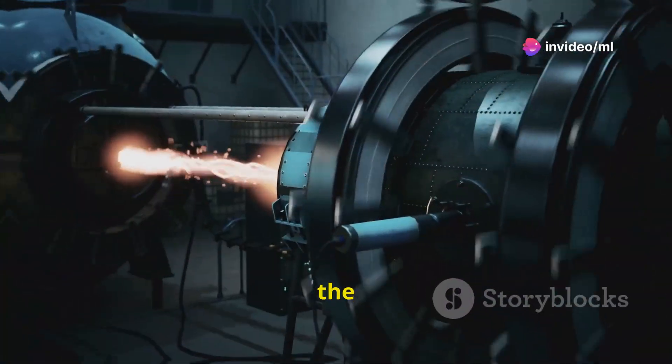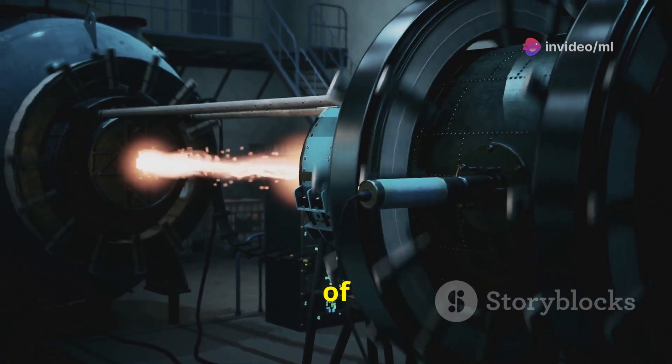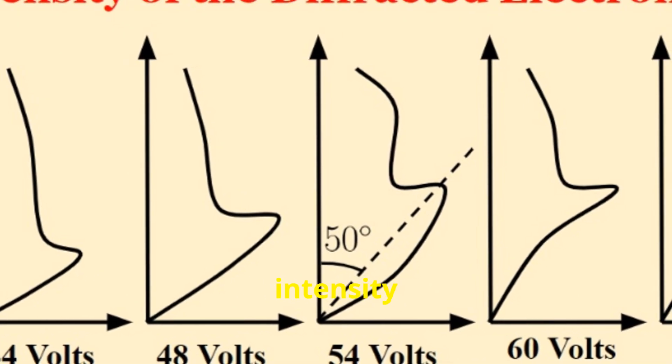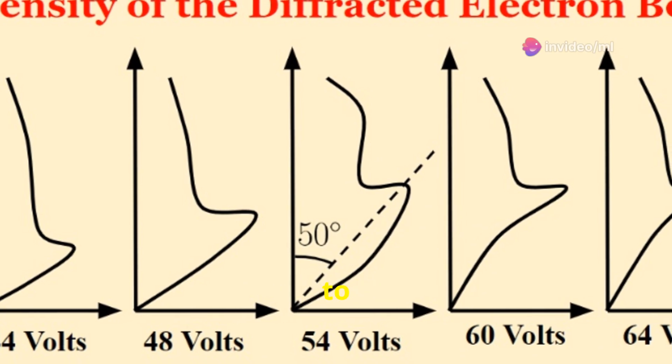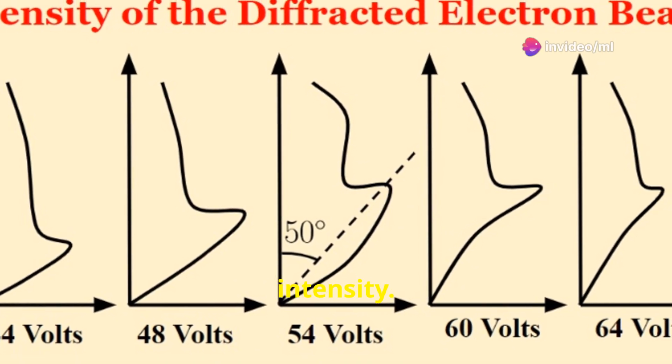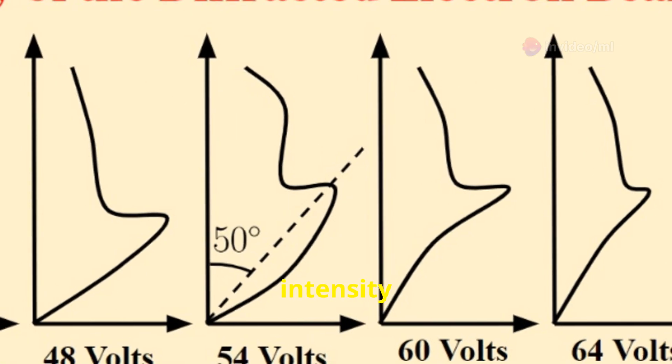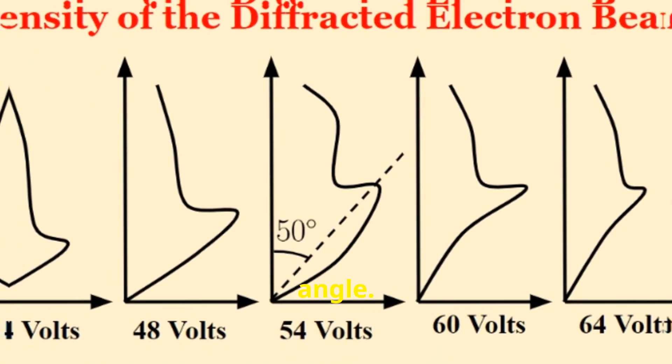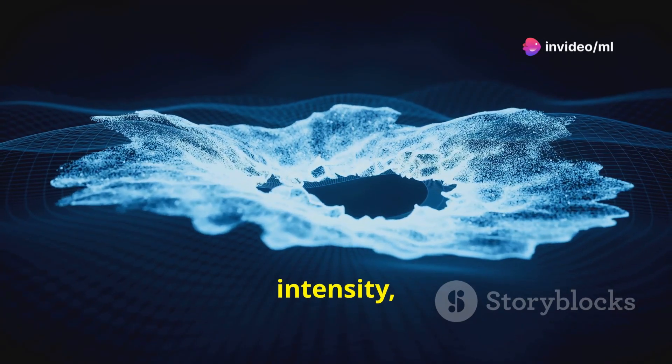As the experiment commenced, Davison and Germer fired a beam of electrons at the nickel target. They meticulously measured the intensity of the scattered electrons at various angles, expecting to see a smooth variation in intensity. To their surprise, they observed something astonishing. The intensity of the scattered electrons did not vary smoothly with the angle. Instead, they found distinct peaks and troughs in the intensity, forming a pattern reminiscent of wave diffraction.